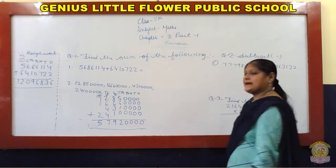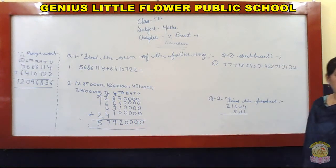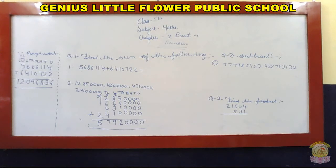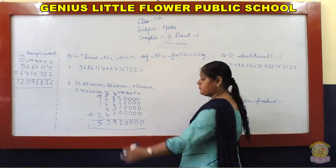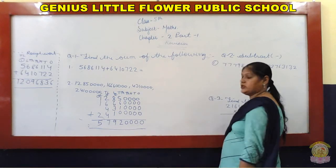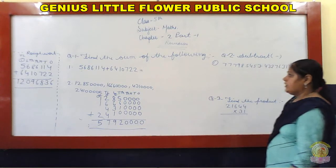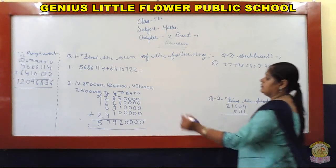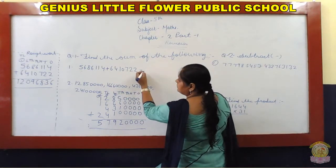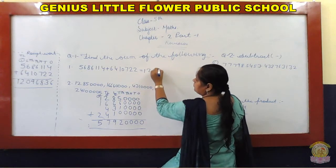Ab humare paas kya number aa gaya? Five crore, 79,20,000. Ok student, clear? Yes — 12, zero, nine.